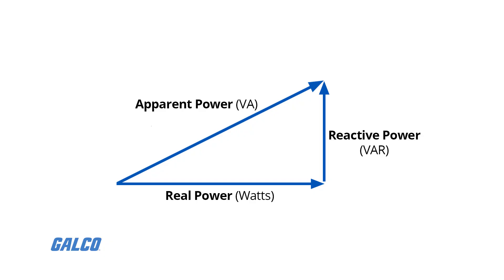The geometric relationship between apparent power, reactive power, and real power can be illustrated in the form of a triangle.